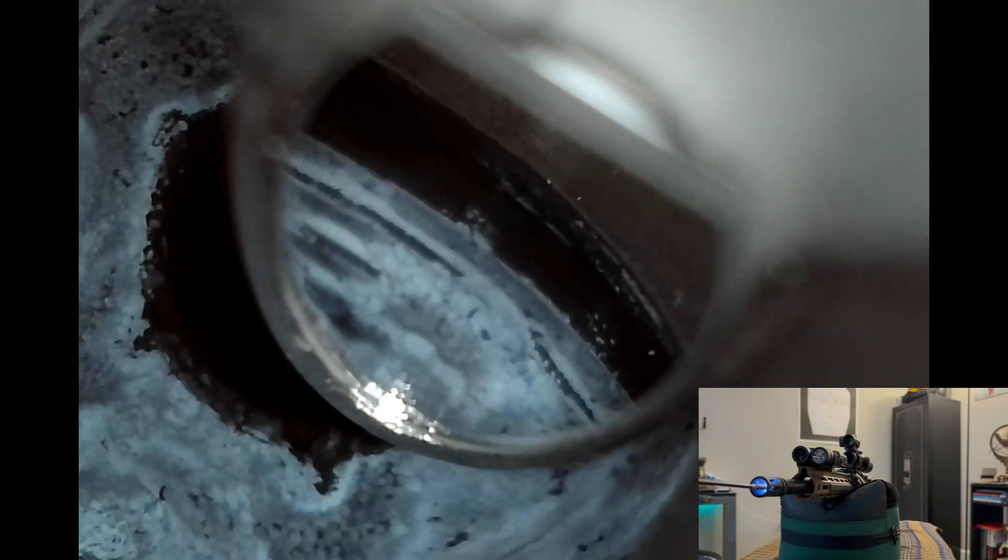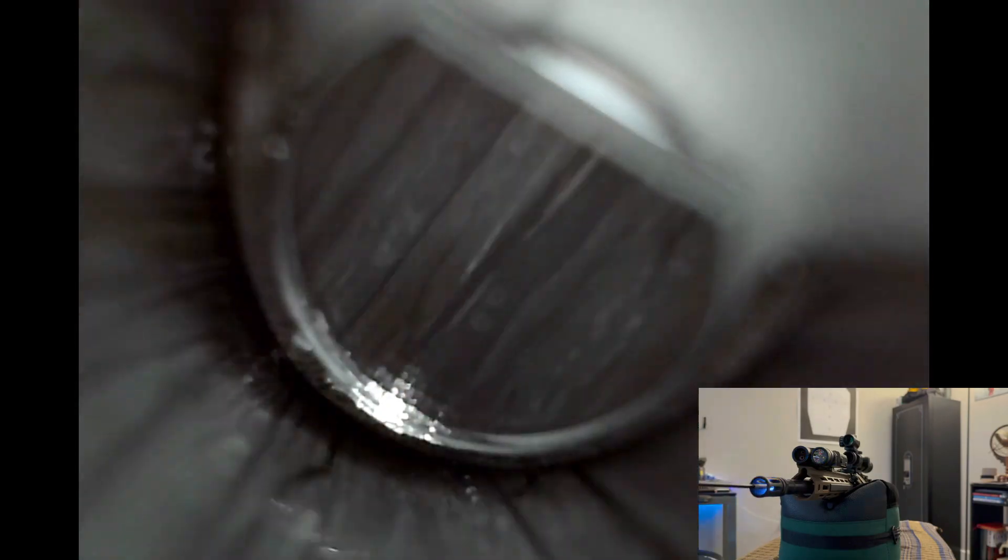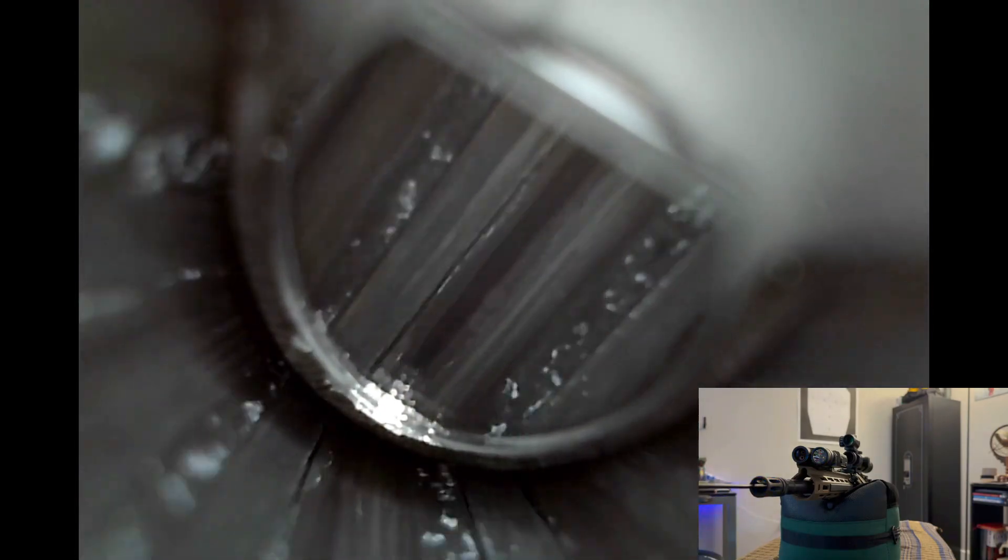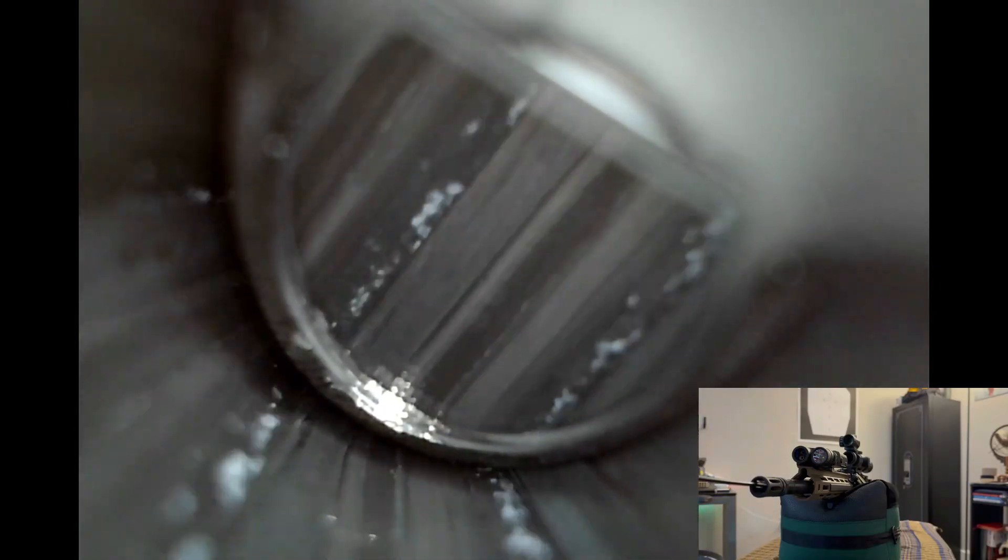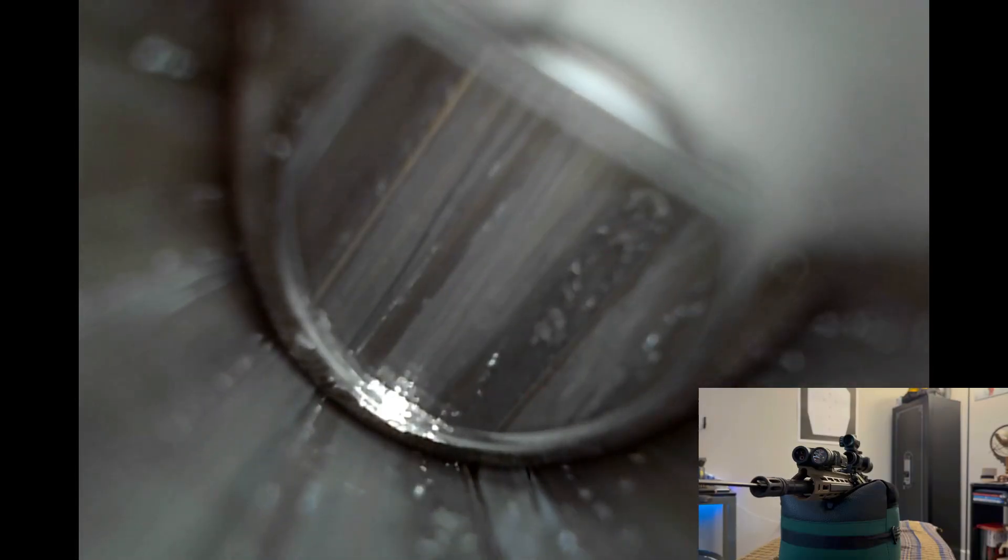This rifle here is a PSA 16 inch chambered in 5.56, which can shoot either 5.56 NATO or .223. This rifle has been shooting almost entirely Fiocchi .223 and 5.56 FMJ for its entire lifespan. It's not the cheapest, but it's what I use for competitions and for shooting paper at the range.